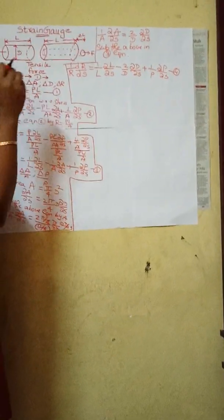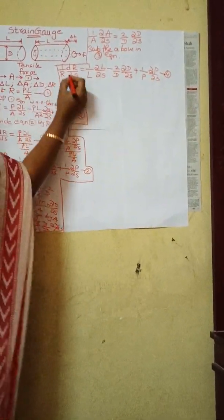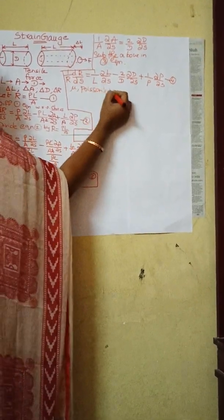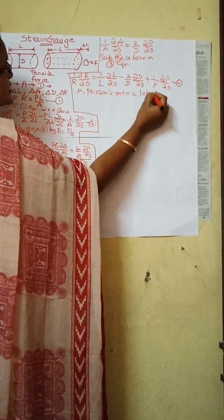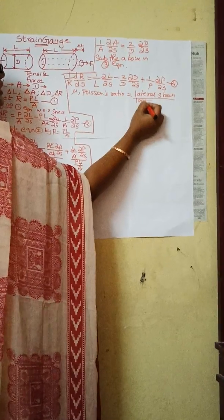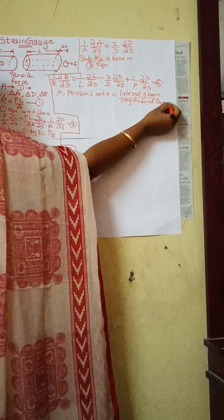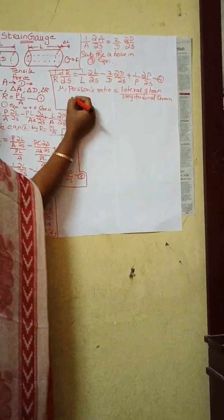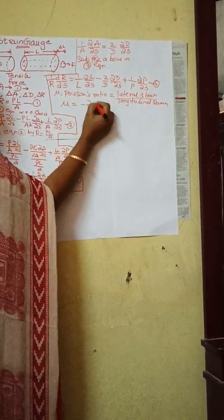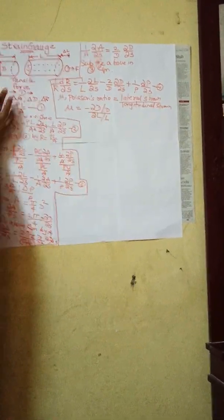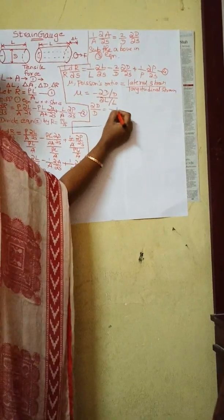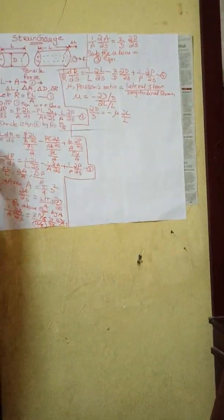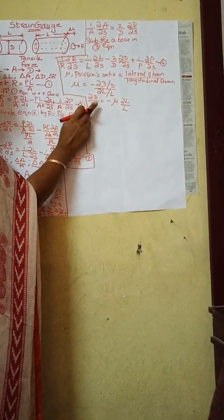Now we need to introduce Poisson's ratio. Let μ be the Poisson's ratio. Poisson's ratio is defined as the ratio of lateral strain to longitudinal strain. Therefore, μ = −(∂D/D) / (∂L/L), which gives us ∂D/D = −μ(∂L/L). Now substitute this expression for ∂D/D into your fourth equation.